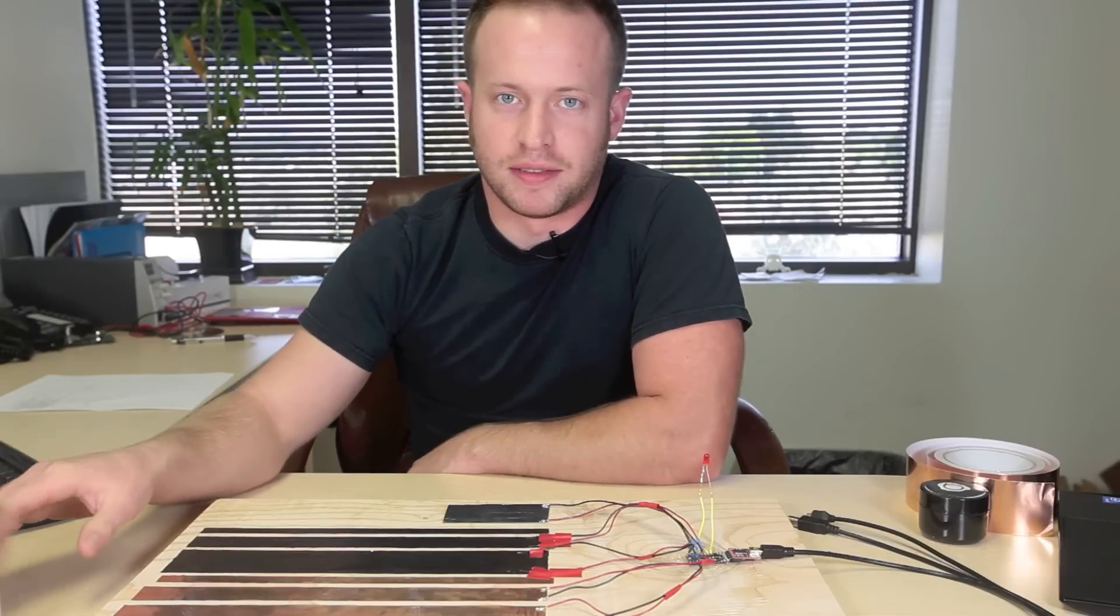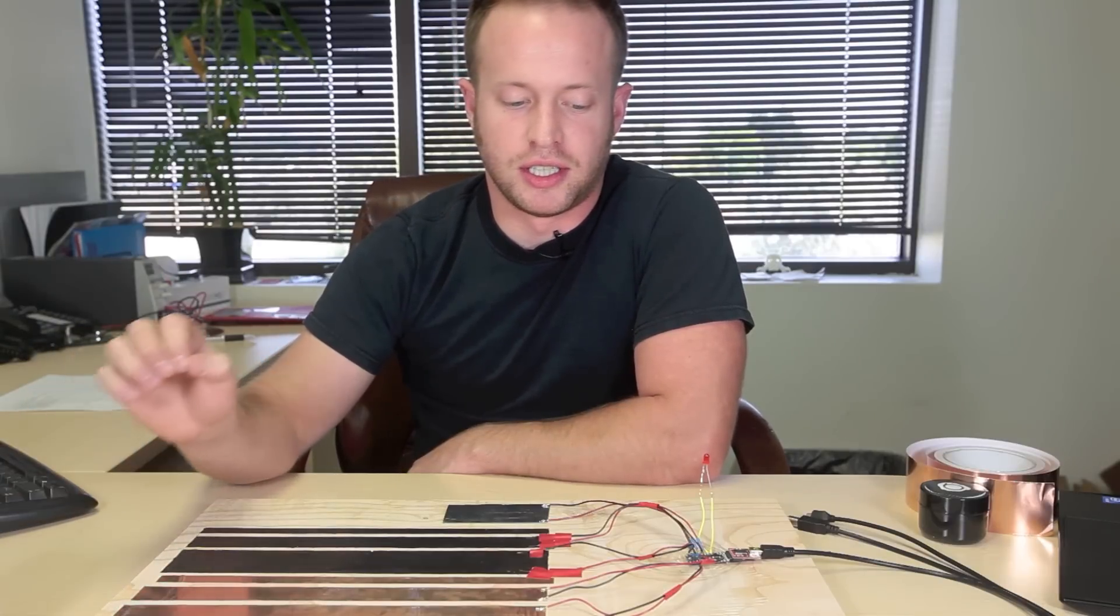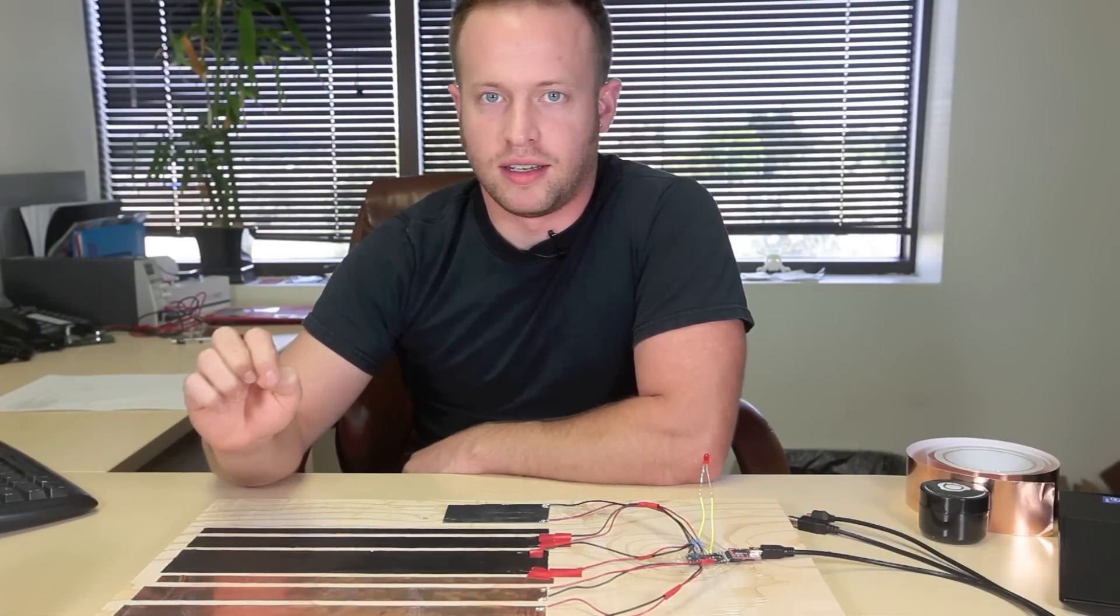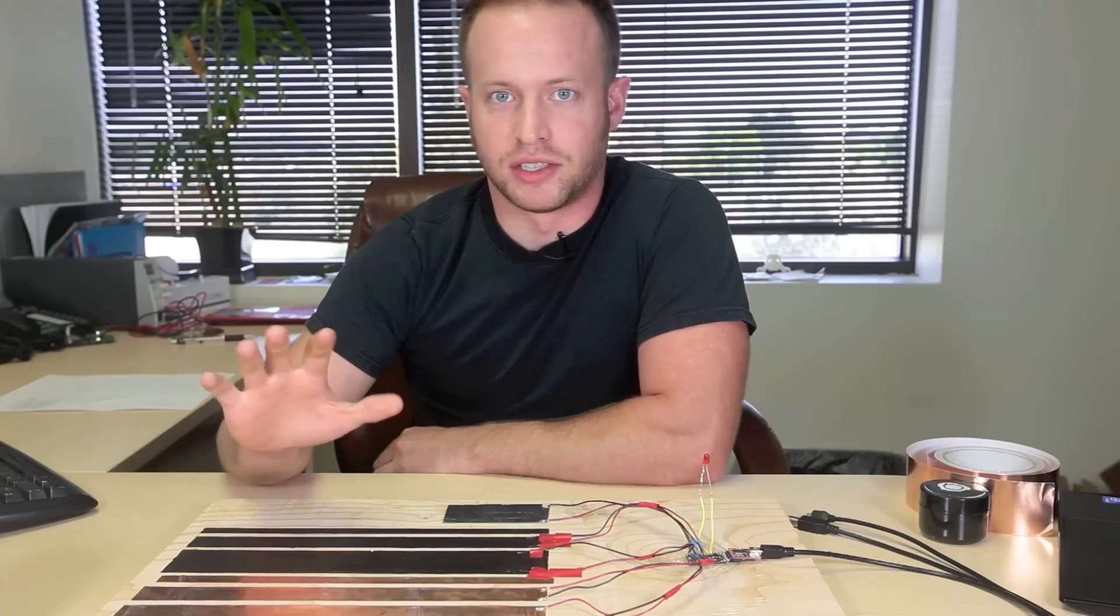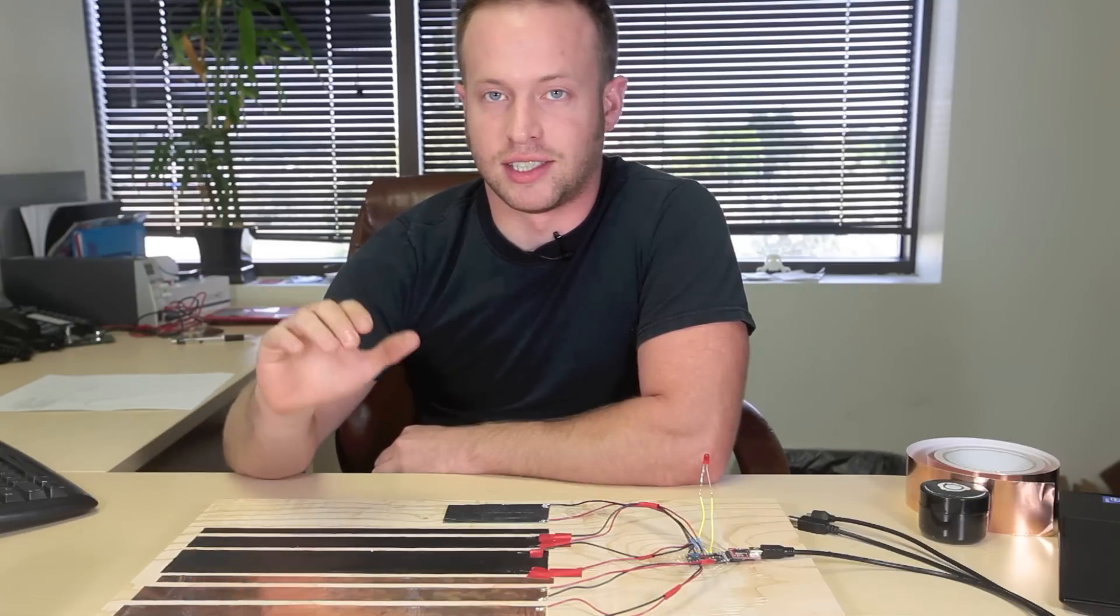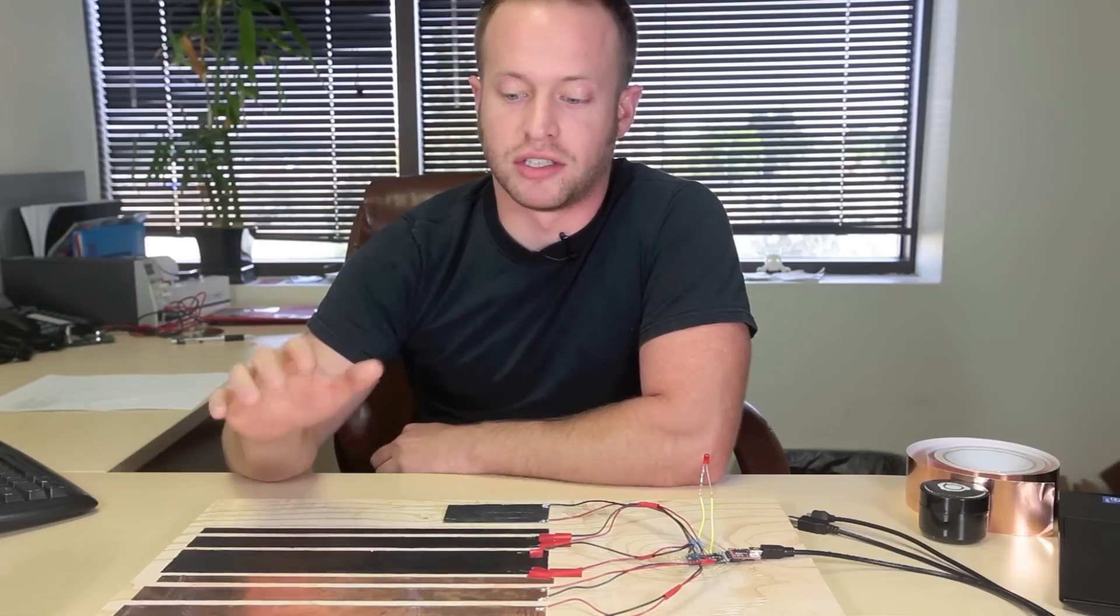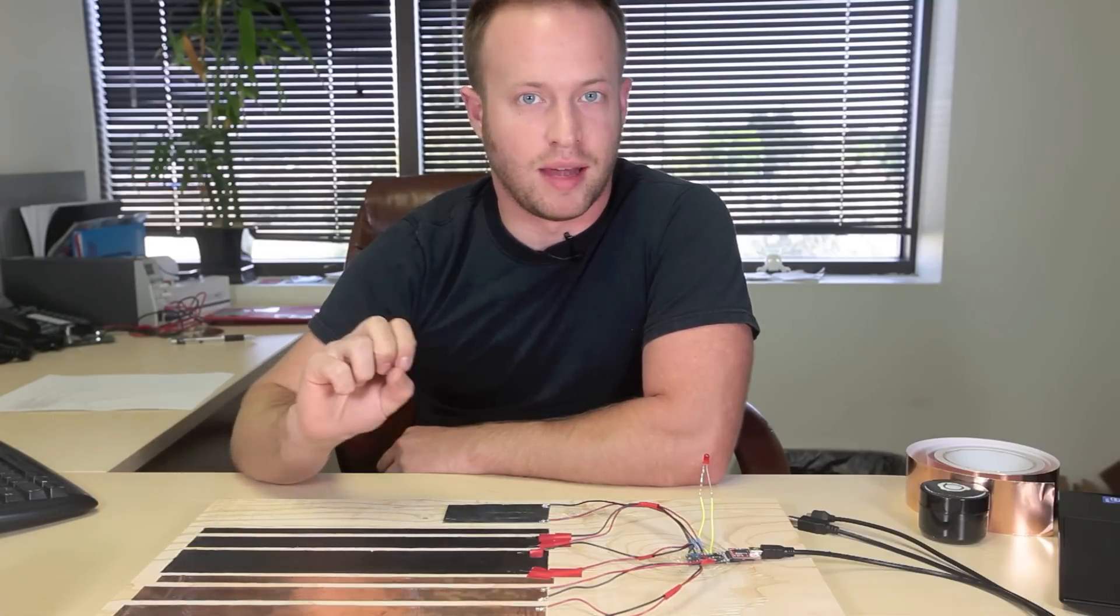Capacitive sensing, for our intentions, is detecting when the capacitance of an element in a circuit has changed. In this case, I'm going to touch something, change the capacitance of that thing and be able to detect that.